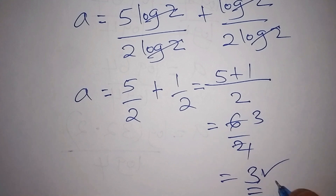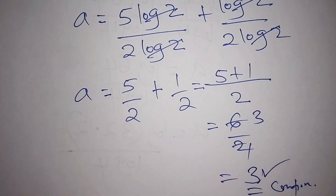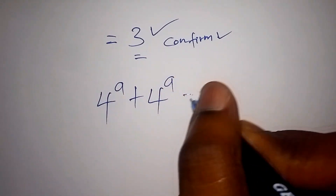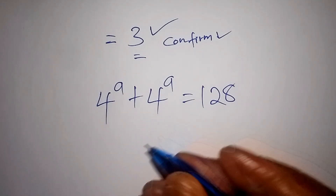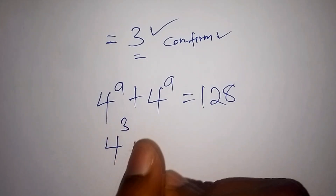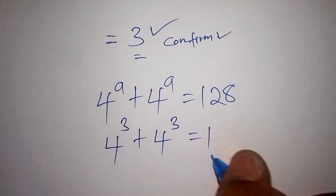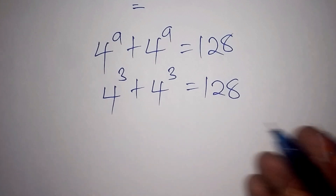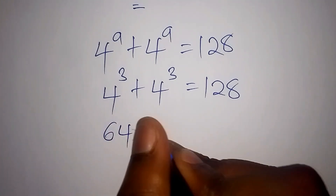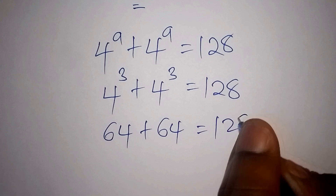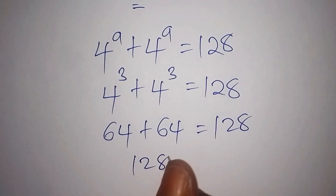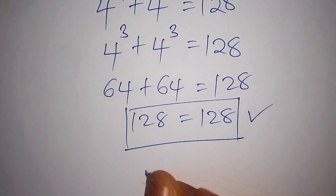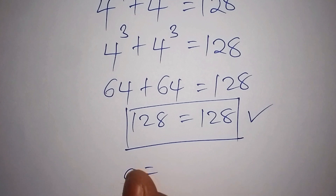We can confirm this answer. Our original equation was 4 to the power of a plus 4 to the power of a equals 128. Substituting a equals 3: 4 to the power of 3 plus 4 to the power of 3 equals 128. Since 4 times 4 times 4 is 64, we get 64 plus 64 equals 128, which confirms our answer is correct. The value of a is 3.